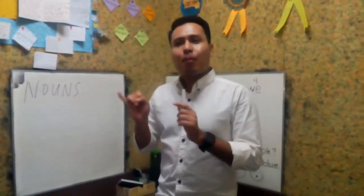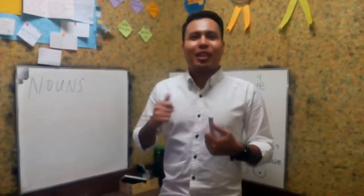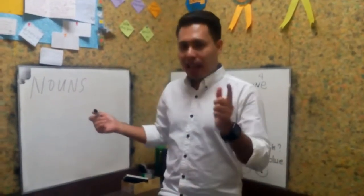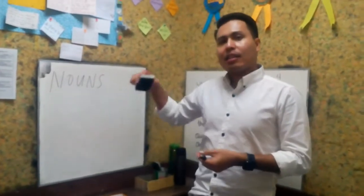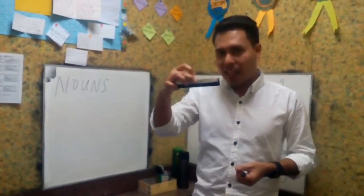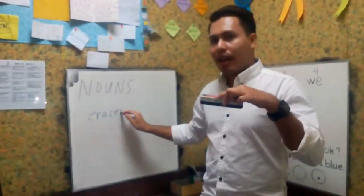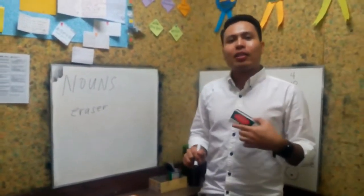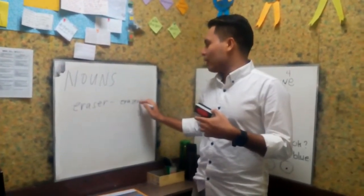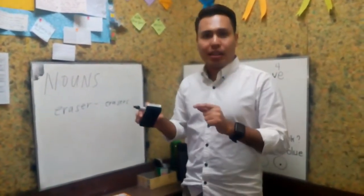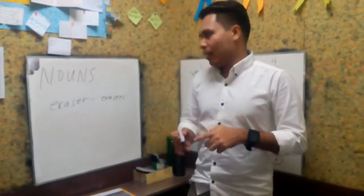When we talk about plural, we have to add S to our noun. For example, our noun here is eraser — this is a thing. So we write eraser. This is only one eraser. But if we want to make it a plural noun, we have to put S, making it erasers — meaning two or more than one.